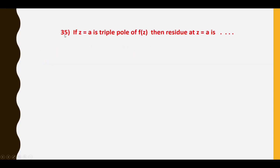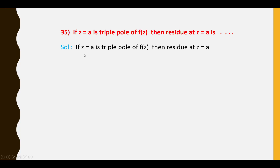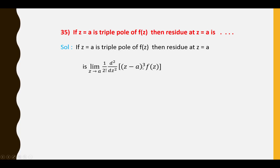Thirty-fifth question: If Z = a is a triple pole of F(Z), then the residue at Z = a is: Res[F(Z), a] = lim(Z→a) (1/2!) · d²/dZ² [(Z − a)³·F(Z)].